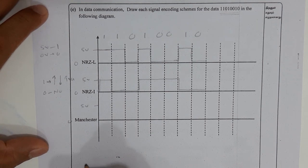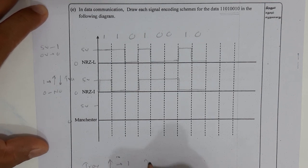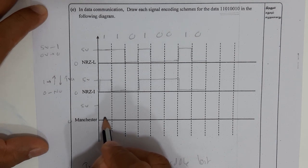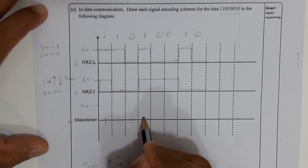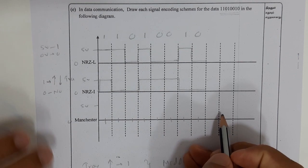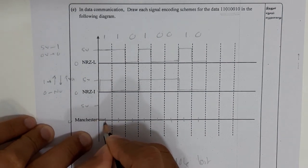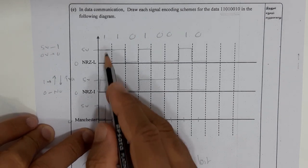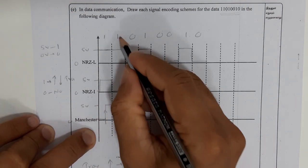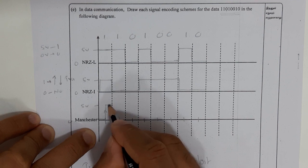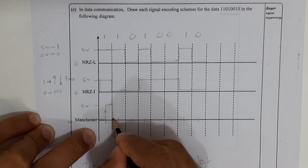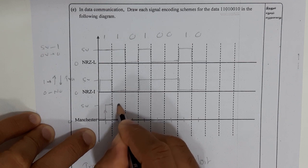Manchester is different: the signal transition goes low-to-high for 1 and high-to-low for 0, and the transition takes place at the middle of the bit. We mark the middle of each bit interval. For bit 1: start at 0 voltage, continue until the middle, then rise up — low to high. For the next bit 1: I am at the higher level, so I need an extra transition at the start — bring it down, continue to the middle, then rise up low-to-high.